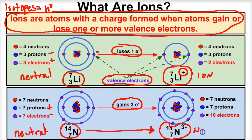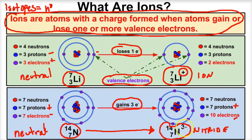We'll learn how to name these in a couple of seconds. Looking at this ion: it has seven neutrons, seven protons (positive), and ten electrons (negative). So the overall charge is three minus. Understand the concept that ions are atoms with a charge formed when atoms either lose or gain one or more valence electrons.